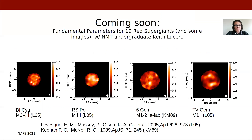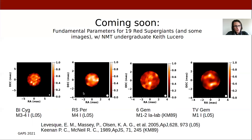Another thing coming soon is a study of the fundamental parameters for 19 red supergiants. I'm working with undergraduate Keith Lucero on that. I have data from my graduate studies on 19 red supergiants, including angular diameters of these objects and near-simultaneous near-infrared spectroscopy, so we'll get a good idea of the parameters of these stars. Unfortunately, most of these stars don't have very good imaging quality data because the coverage wasn't high enough or conditions weren't great, but there are a few — such as RS Per — that look pretty promising, and we may get additional images of red supergiants across the HR diagram from that survey.